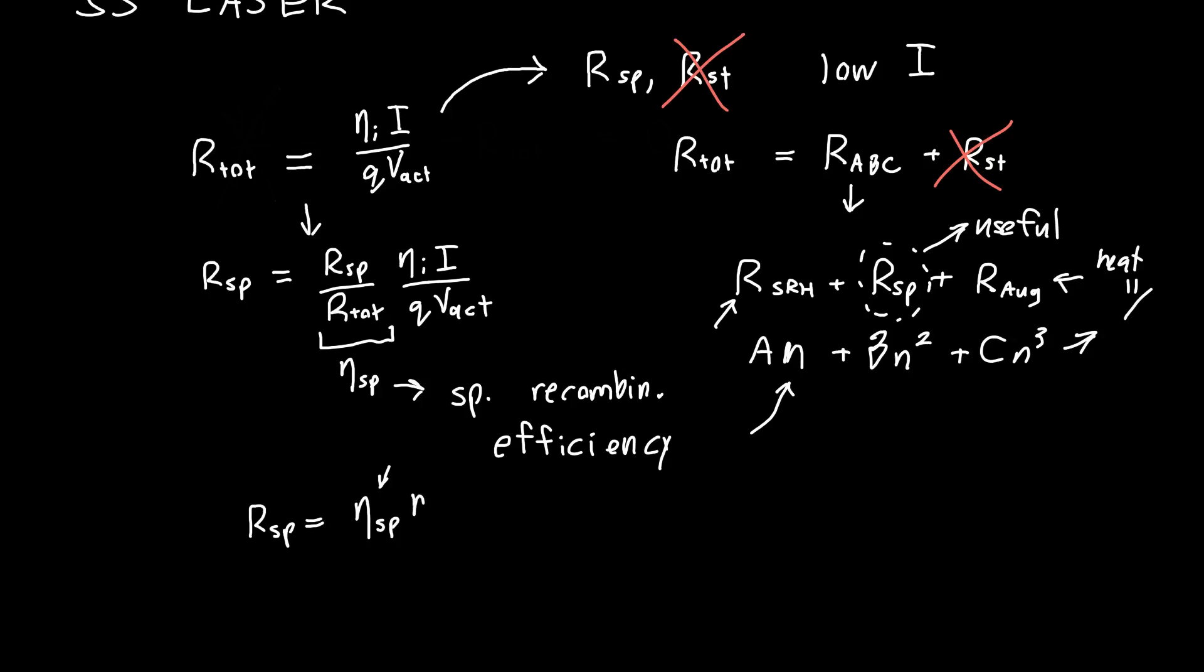So if we can rewrite the entire equation now as these two different efficiencies times i over q times our active region volume. And yeah, this is a bit of a hack. But it makes things conceptually easier to deal with. Because if we pretend that we know this spontaneous recombination efficiency, and we generally do, or we can measure it, then this set of equations becomes much easier to deal with. And I might make a video on eta spontaneous in the future. But it essentially allows this equation to at least seem like it's independent of carrier density.